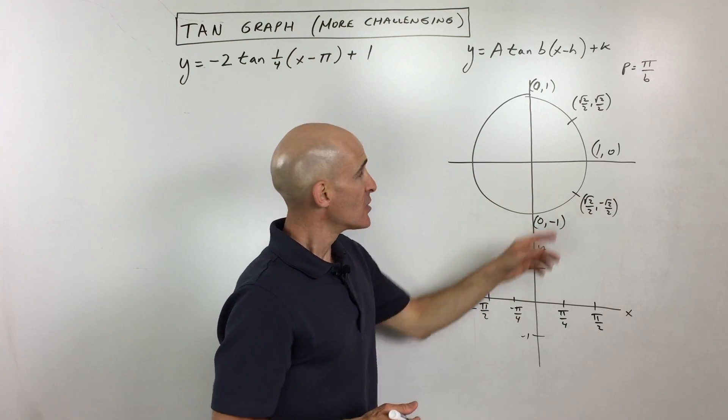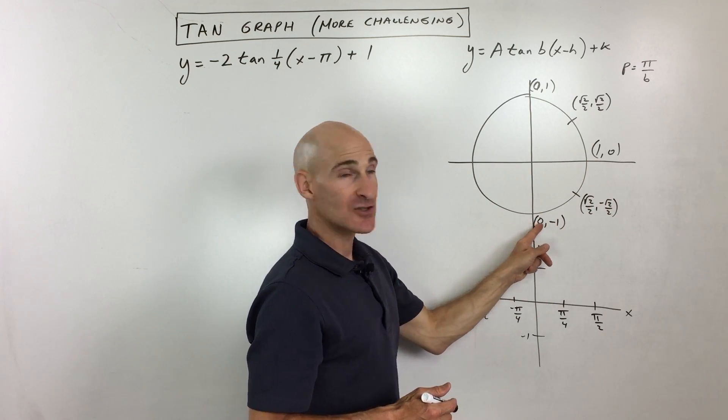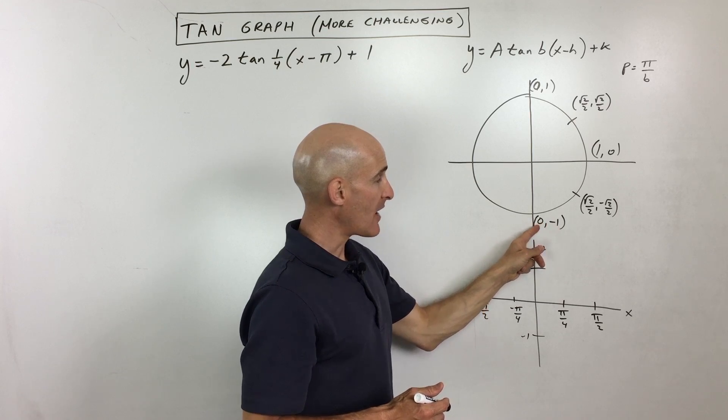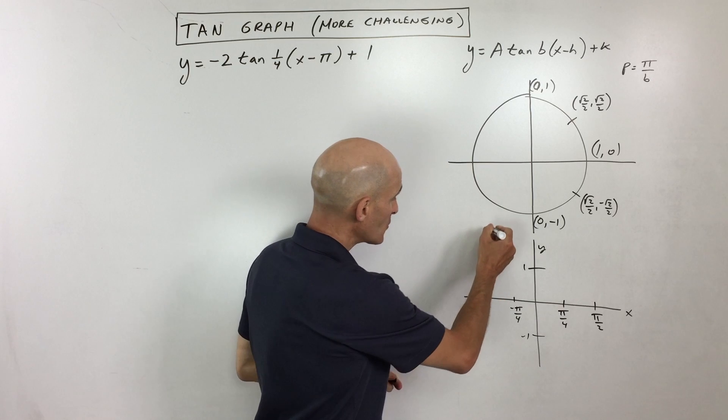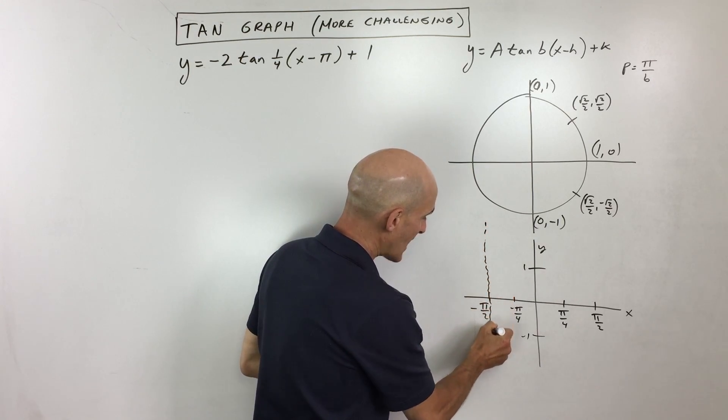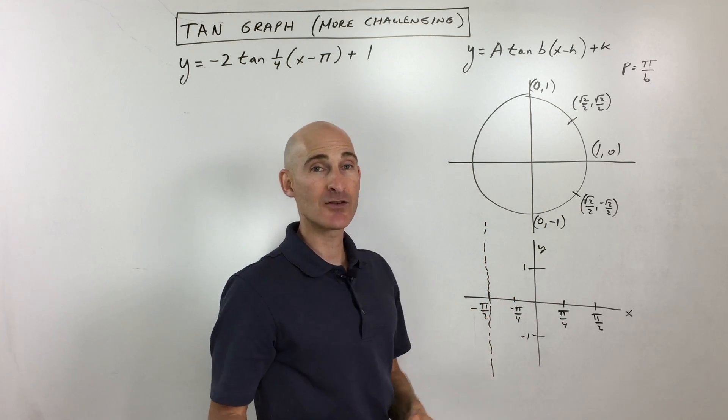So over here at negative pi over 2, when you do y divided by x, negative 1 divided by 0 is undefined because you can't divide by 0. So what that means is we get a vertical asymptote right there at negative pi over 2.